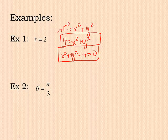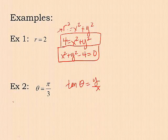For example two, all you know is that theta is pi over three. I would use the conversion that you know is tangent of theta equals y over x. Let's figure this out. What is the tangent of pi over three?